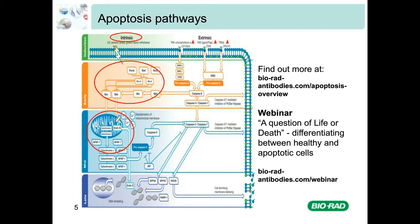A cocktail of factors is released from the mitochondria once membrane integrity is compromised. One such factor is cytochrome C, which binds to a cytoplasmic scaffold protein called apoptotic protease activating factor 1 (APAF1). This results in the formation of a quaternary protein structure called the apoptosome, which amplifies the death response. Apoptosis is ultimately driven by two classes of highly specialised proteases called caspases — initiator caspases, activated by self-cleavage, and effector caspases, activated downstream by initiator caspases.